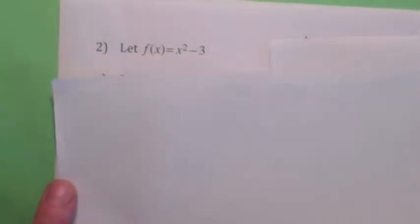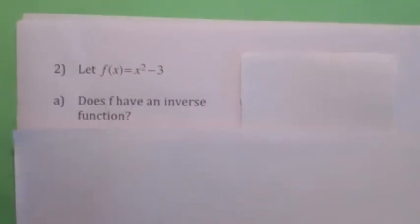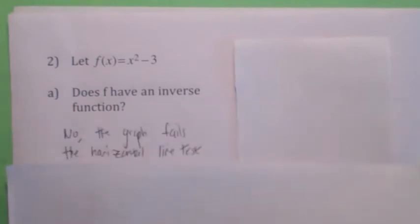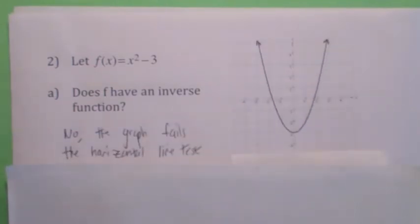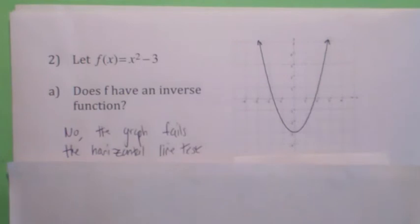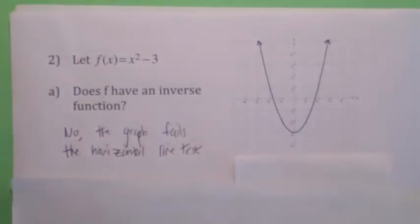On this next one, does this function have an inverse? The answer is no. If you graph this function, it's clearly not one-to-one. It fails the horizontal line test, which means you can draw a horizontal line that hits it more than once.